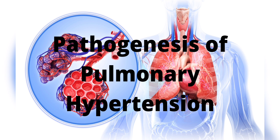Most forms of PAH share a common pathophysiology which includes pulmonary vasoconstriction, remodeling of the pulmonary vessel wall characterized by intimal thickening, medial hypertrophy, and in advanced disease, thrombosis in situ. A single primary cause remains elusive. One mechanism is believed to involve endothelial dysfunction.